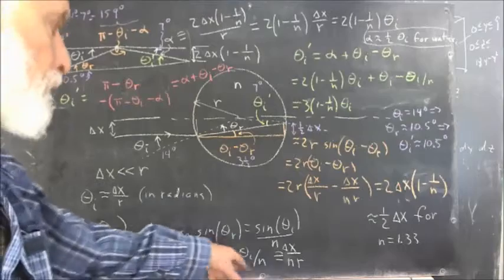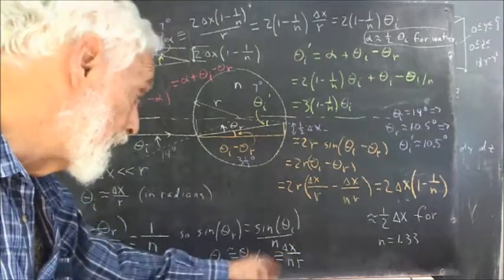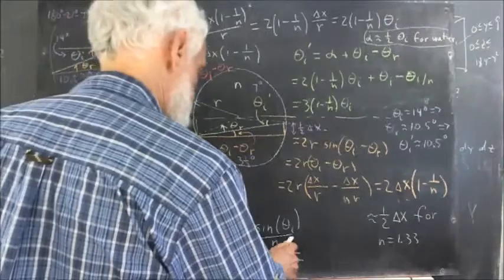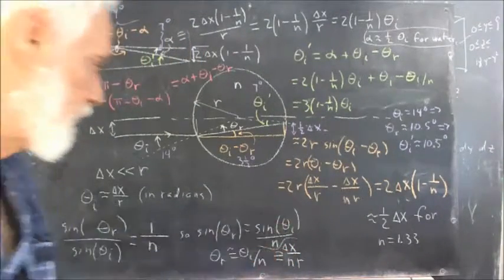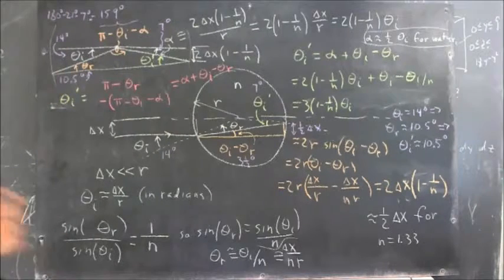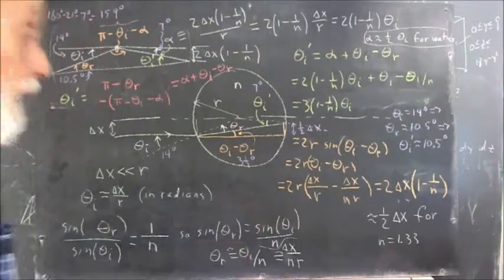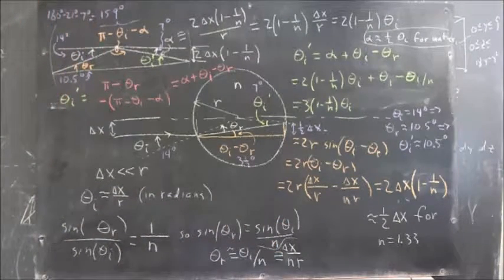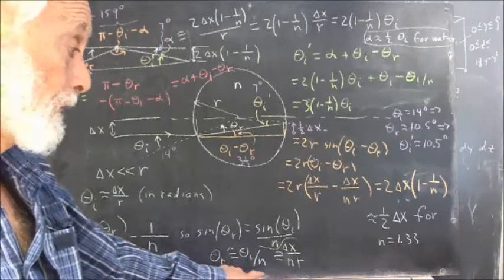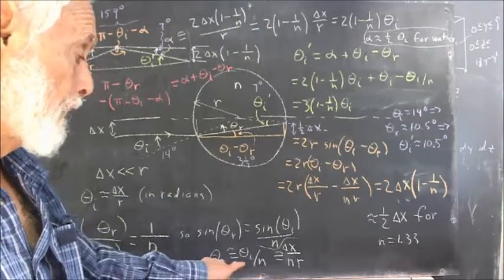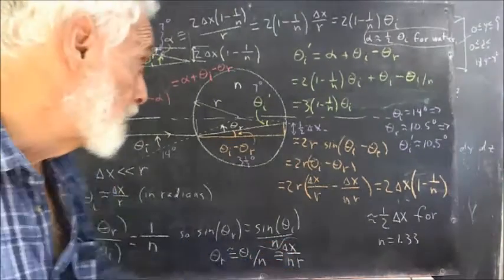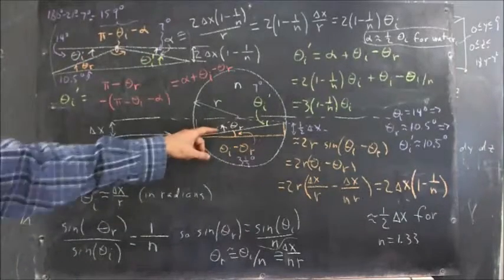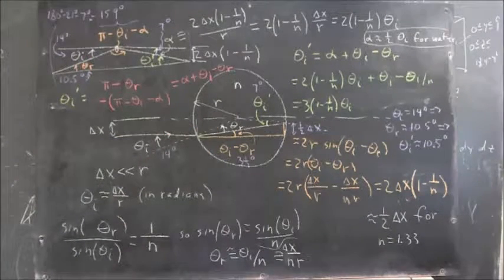So the sine of theta sub r is going to be sine of theta sub i divided by n. Since for the small angle approximation, sine of theta sub r and sine of theta sub i are approximately equal to theta sub r and theta sub i, we have theta sub r approximately equal to theta sub i divided by n. Since theta sub i is delta x over r, theta sub r equals delta x over n times r. So we have an expression for the refracted angle theta sub r.